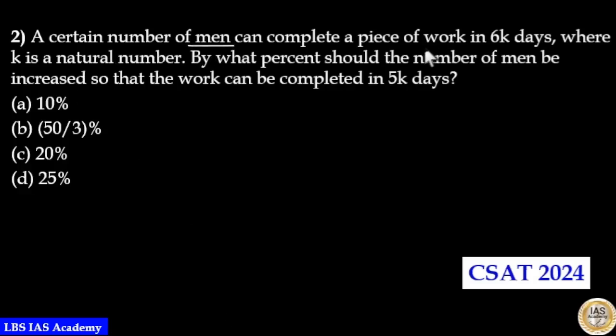A certain number of men can complete a piece of work in 6k days where k is a natural number. By what percentage should the number of men be increased so that the work can be completed in 5k days?